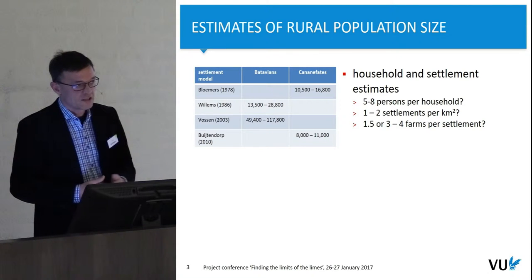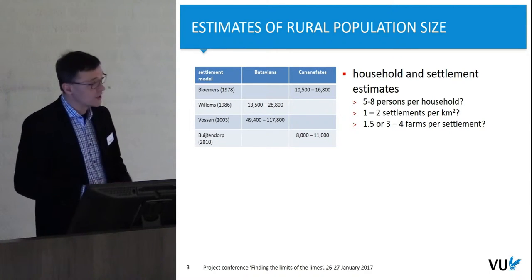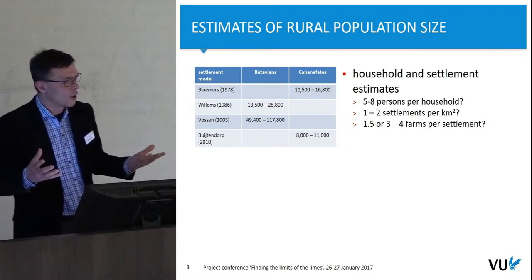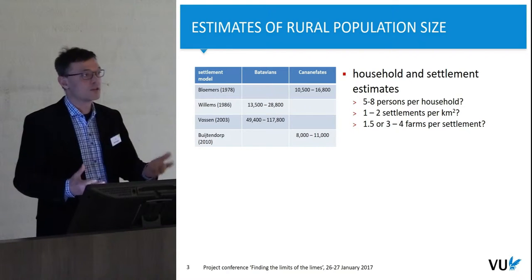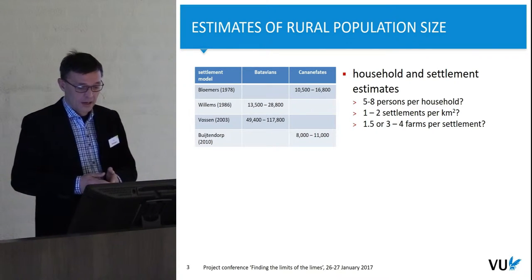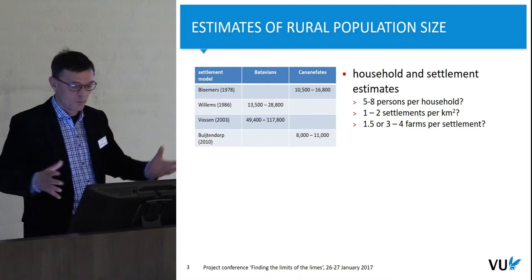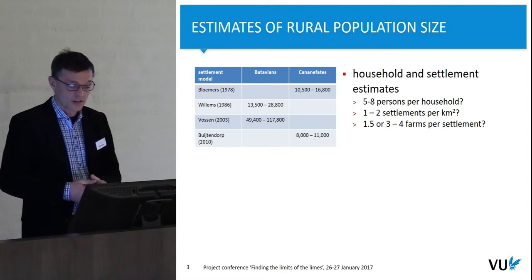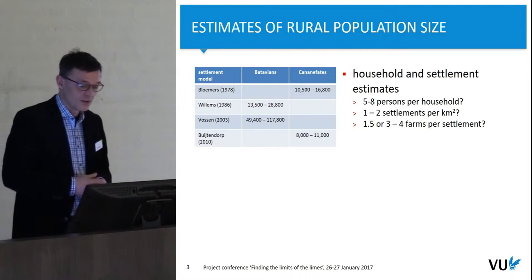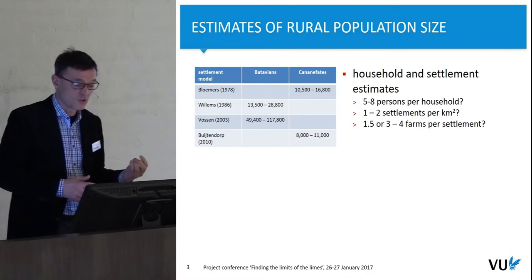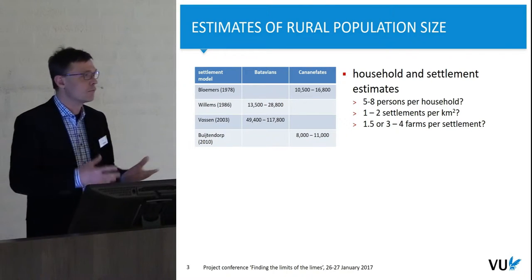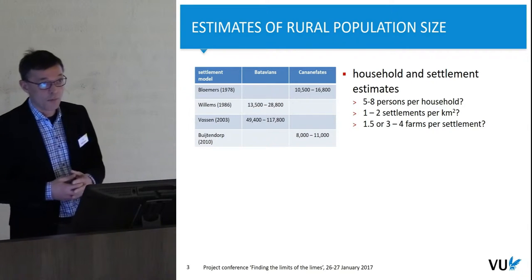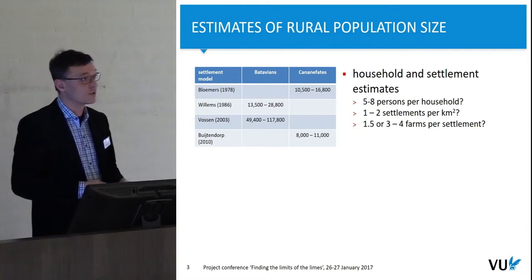These settlements would, on average, have anywhere between 1.5 or three to four households or farms per settlement. If you calculate these figures over the whole area and you see the split between the Batavians and the Cananaphats, the estimates for the Roman period — most probably reflecting the middle Roman period, so the height of population density — are quite different, with quite a big range. For the western area it is clear that the number of people living there was considerably lower than for the eastern Batavian area.